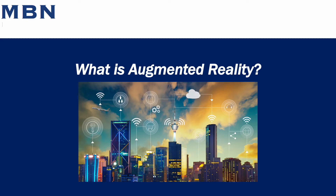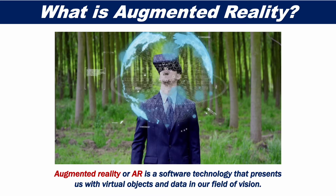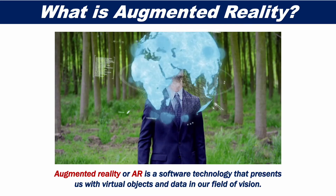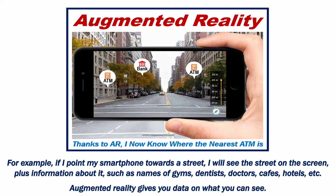What is augmented reality? Augmented reality, or AR, is a software technology that presents us with virtual objects and data in our field of vision. If I point my smartphone towards a street, I will see the street on the screen plus information about it, such as the location of gyms, dentists, doctors, cafes, hotels, etc. Put simply, augmented reality gives you data on what you can already see.